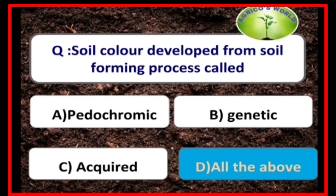Dynamic properties of soil include soil consistency, soil strength, and soil color. Soil color developed from the soil forming process is called pedochromic — genetic and acquired.